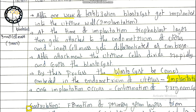The process by which the blastocyst becomes embedded in the endometrium wall of the uterus is called implantation. Once implantation takes place, it is the confirmation of pregnancy.